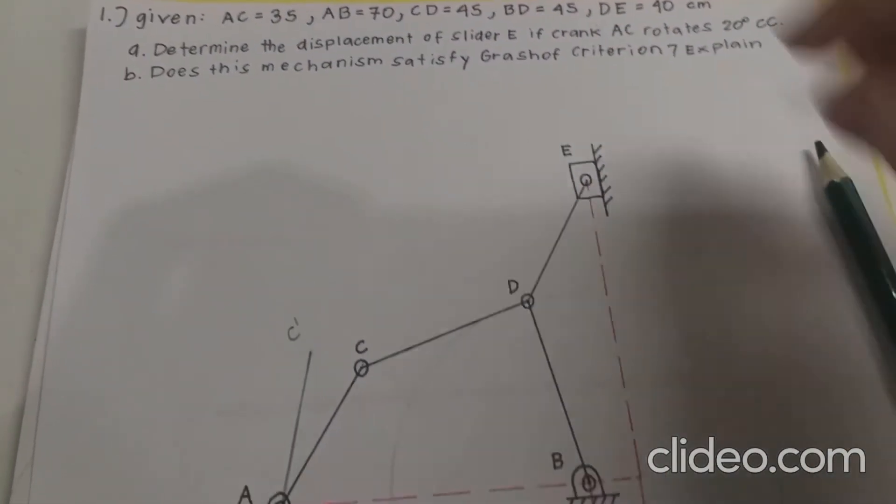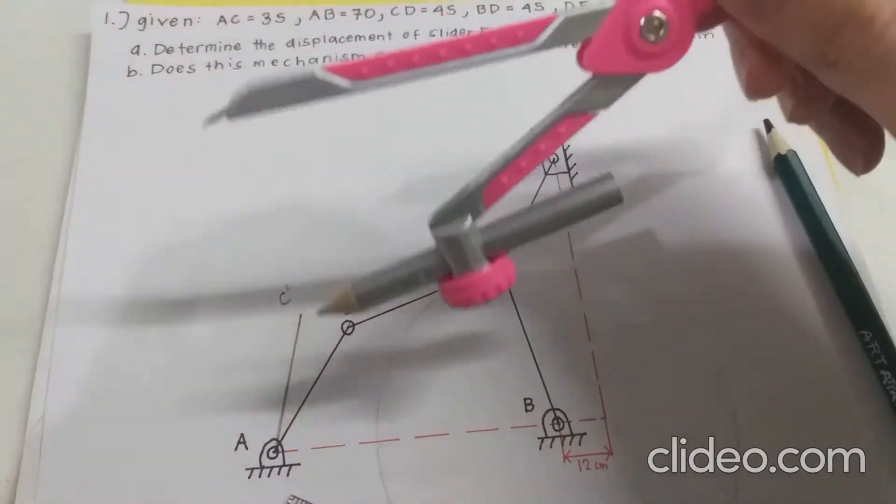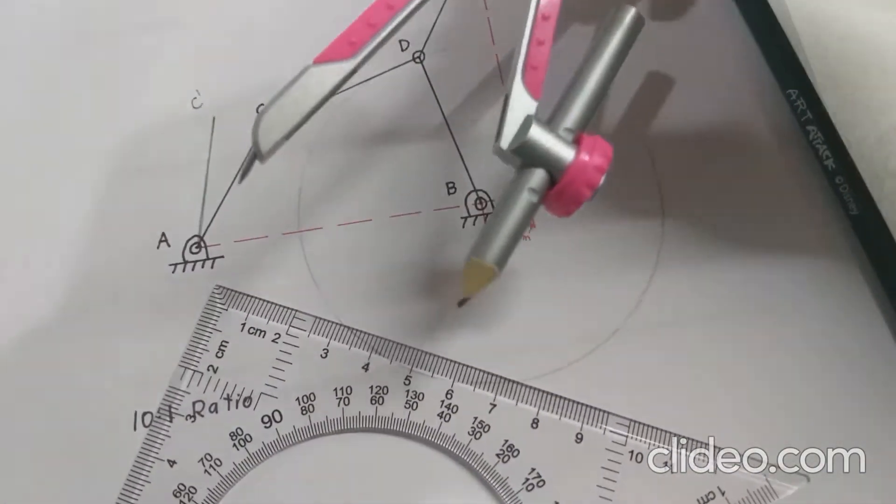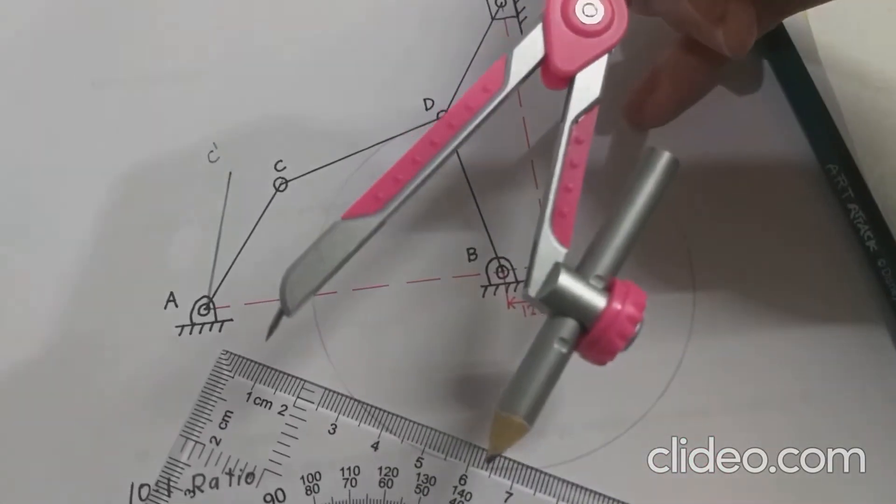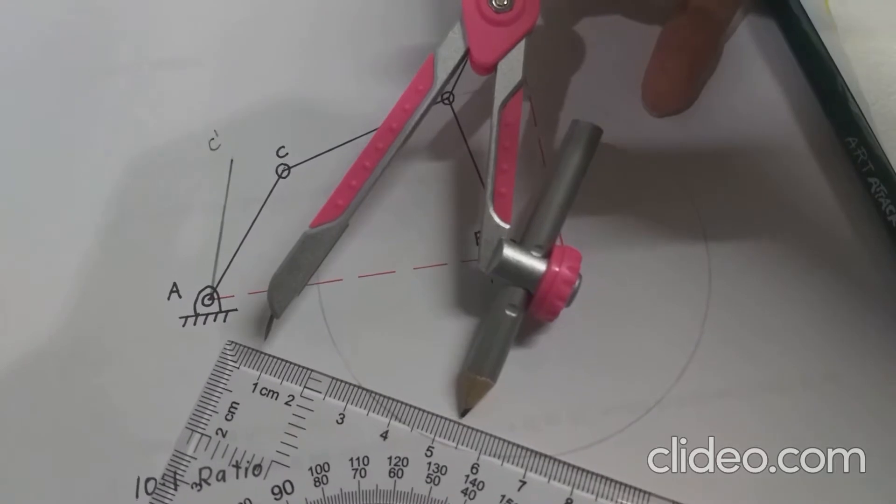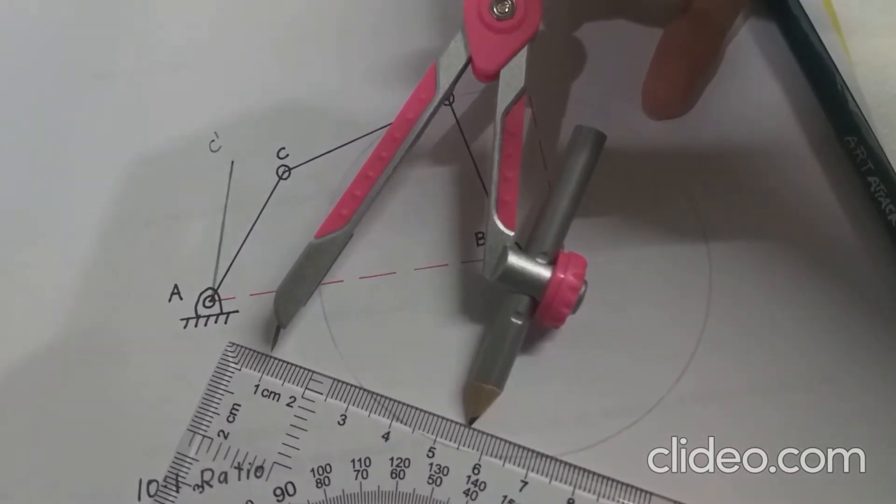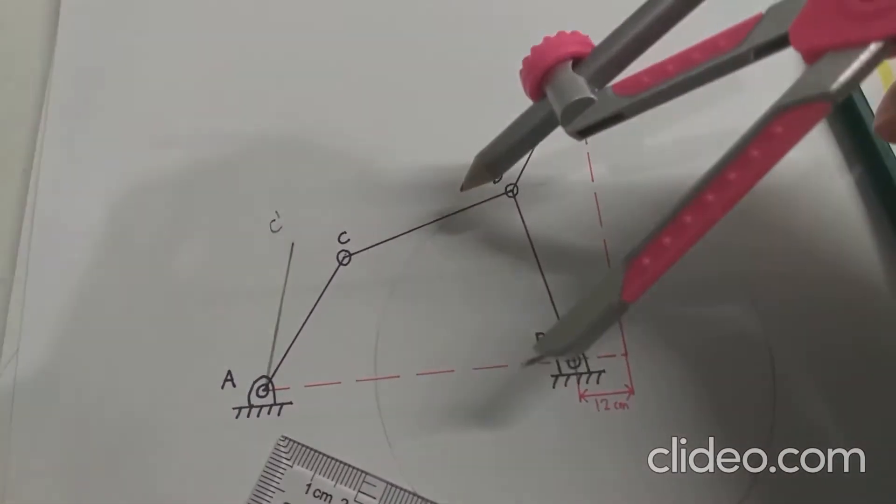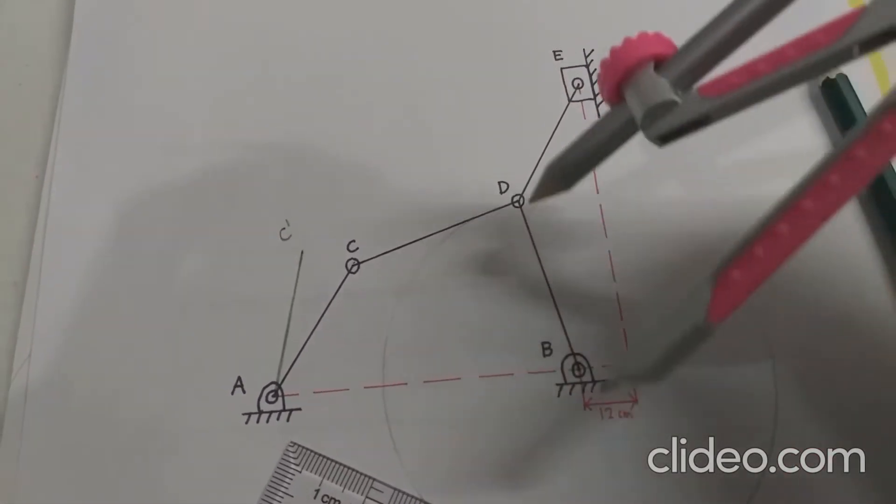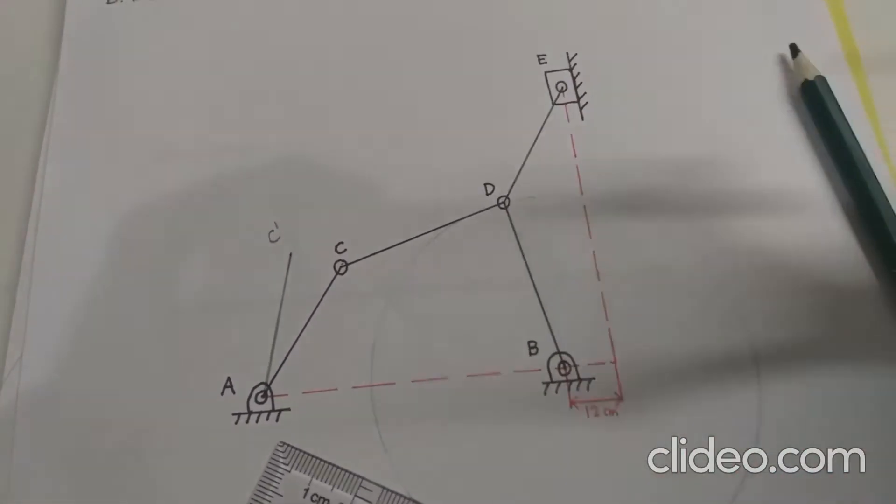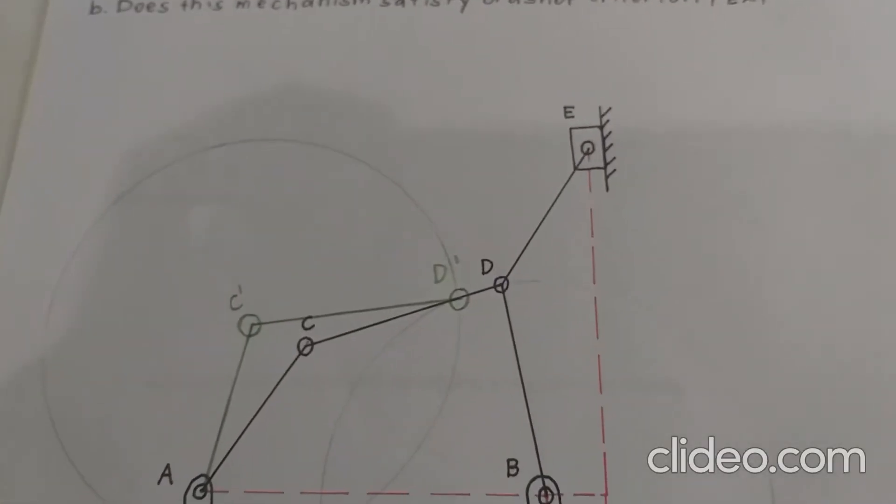So simply all we have to do is draw another circle from this point, point C prime, measuring 45 centimeters, and find the connection within point B to point D, which is this circle here. So now that we have our D prime...